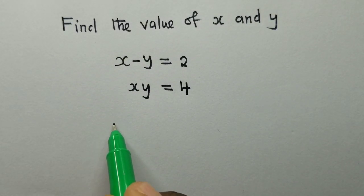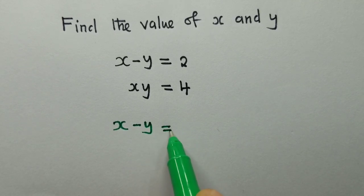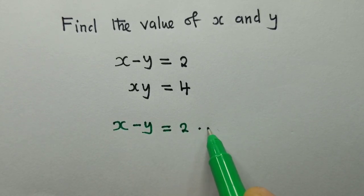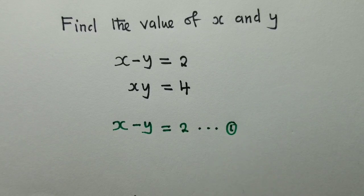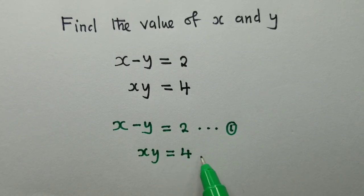So I've got x minus y is equal to 2. So this is our equation 1. Equation 2, that is xy is equal to 4. So this is our equation 2.